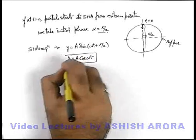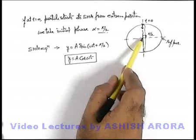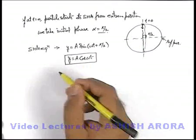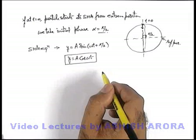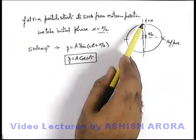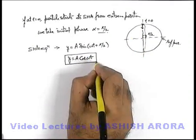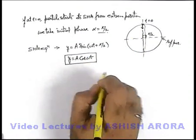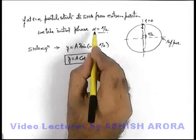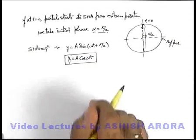So always remember: whenever a particle starts its SHM from its mean position, then its SHM equation is given as y equal to A sine omega t, which we have discussed in the previous slide. And whenever a particle starts its SHM from its extreme position, its SHM equation is given as y equal to A cosine omega t. And if it is starting from any other point, we just include an initial phase alpha and its SHM equation is A sine of omega t plus alpha.